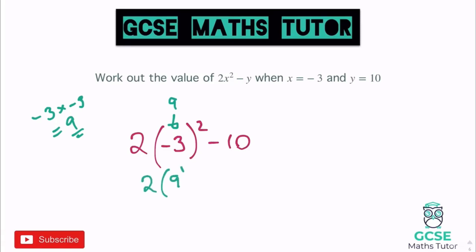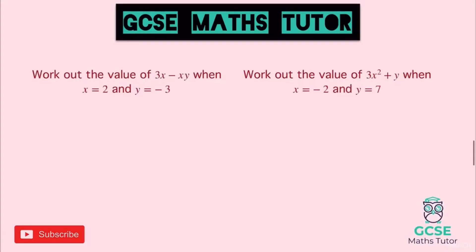Negative 3 squared means negative 3 multiplied by negative 3, and a negative times a negative is positive, so the answer is 9. If you type negative 3 squared into a calculator without brackets it gives negative 9 — which is wrong. Make sure you put the negative number in brackets so the calculator squares the whole thing. So we have 2 lots of 9 take away 10, which is 18 take away 10, giving us the answer 8.